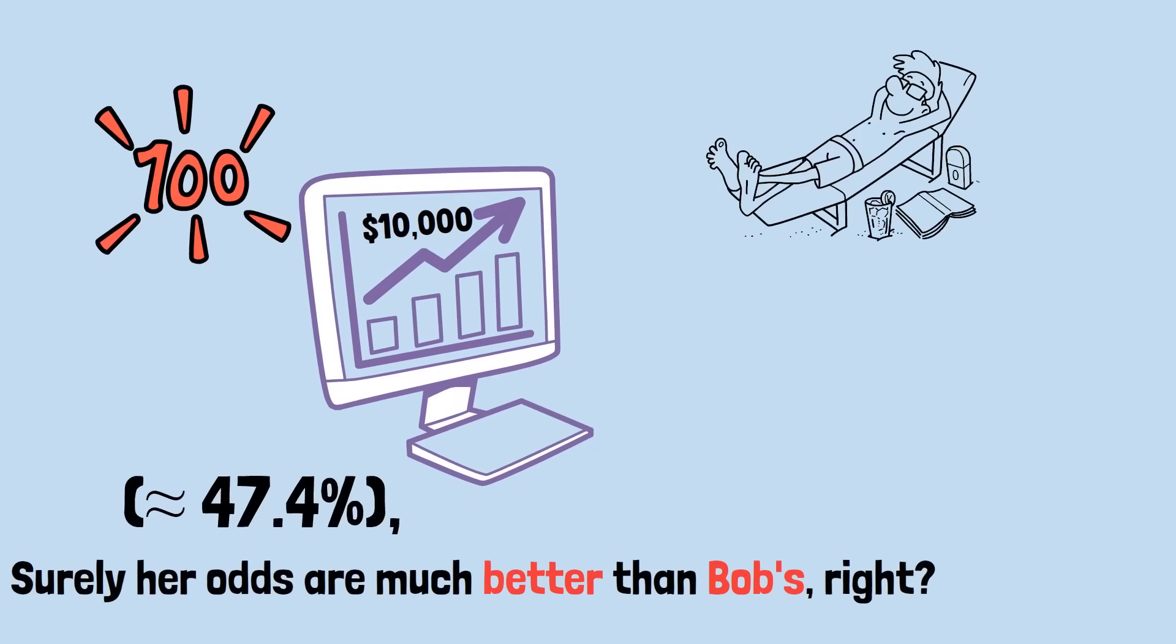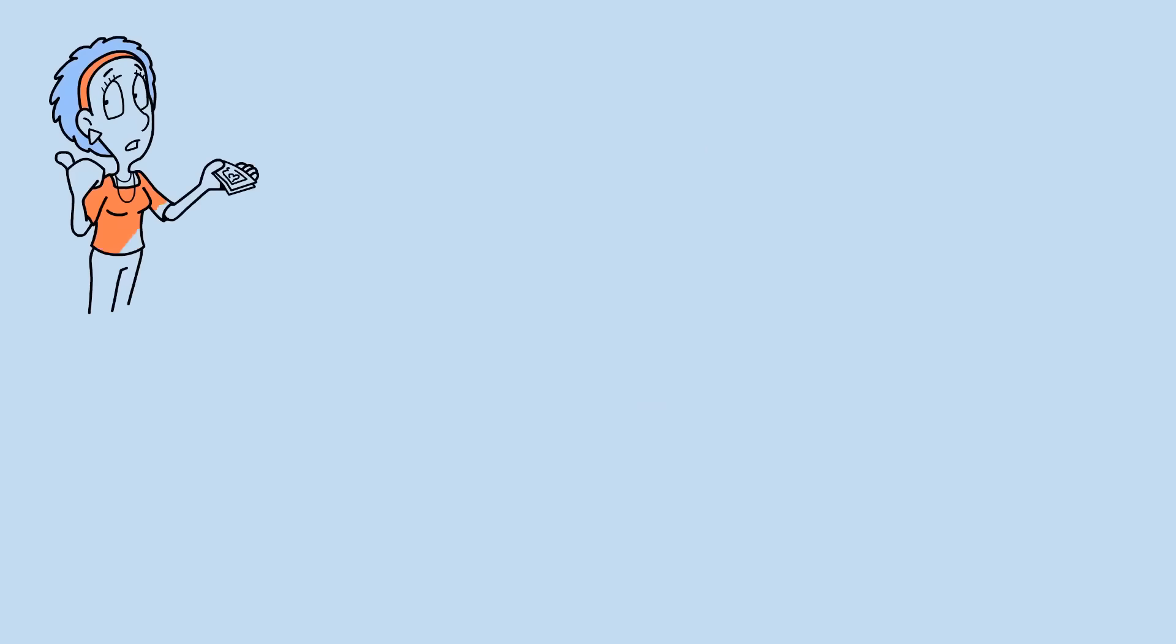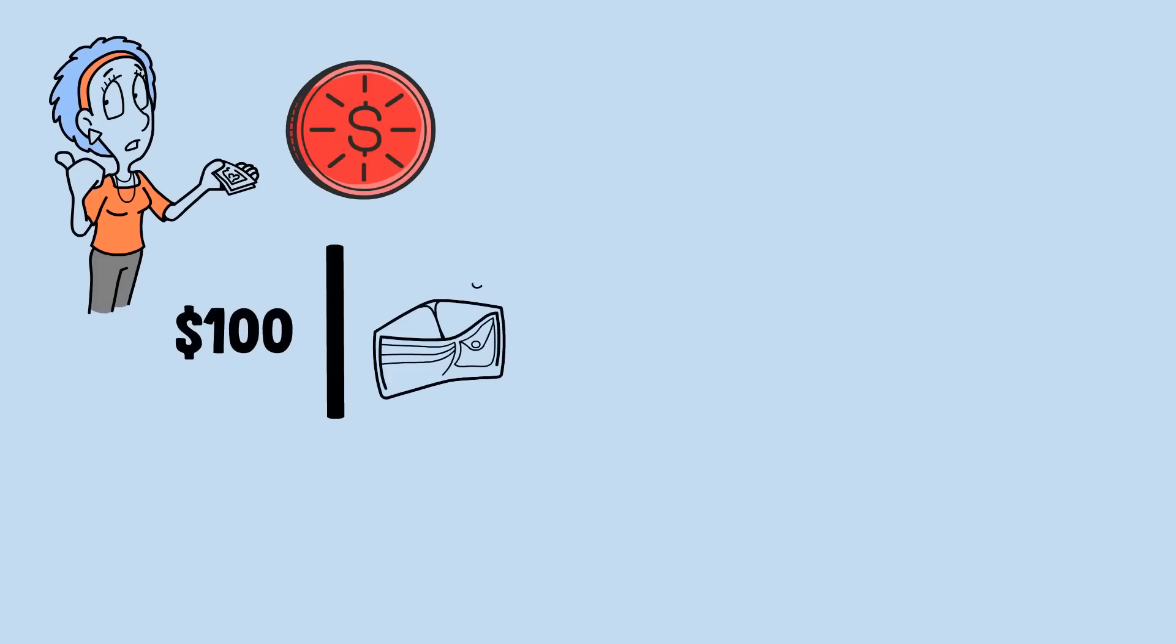Now meet Carlos, the richest person in our hypothetical universe. He walks in with $100 trillion, more money than exists in the real world. Like Alice, he's going to bet $1 at a time on Red until he either wins $100 or loses everything.